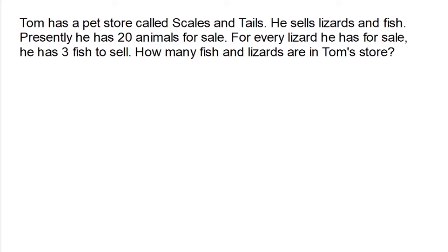Let's take a look at this problem. It says that Tom has a pet store called Scales and Tails. He sells lizards and fish. Presently, he has 20 animals for sale. For every lizard he has for sale, he has three fish to sell. How many fish and lizards are in Tom's store? The problem tells us that he has 20 animals. What is the problem asking us to find? Of those 20 animals, how many are fish and how many are lizards? So we're going to use the make a table strategy to solve this problem. The first thing we need to do is make a table.